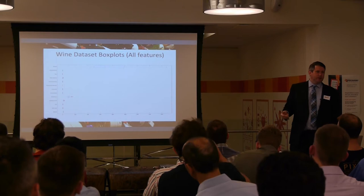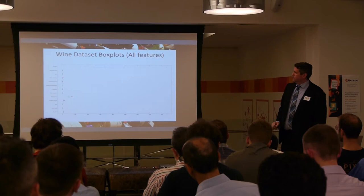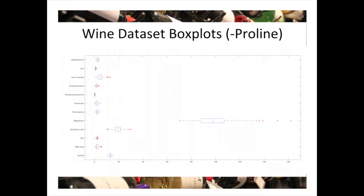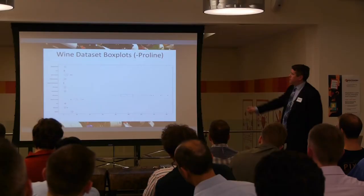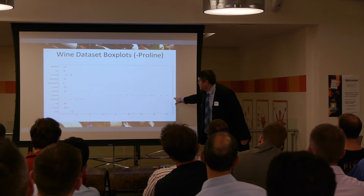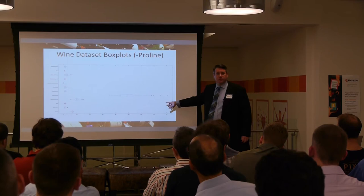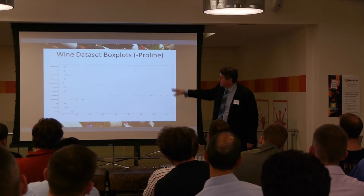One thing we could do is normalize all this data, but I won't do that just for this plot. Let's drop the outlier feature. The one we dropped is called proline — some chemical. This one is magnesium, and it's also at a different scale — about one order of magnitude off, whereas proline was two orders of magnitude off. We have these plus signs which are outliers in the data. So let's drop magnesium as well. Now we've dropped proline and magnesium and we're looking at the rest of the features.